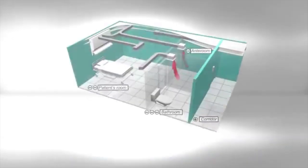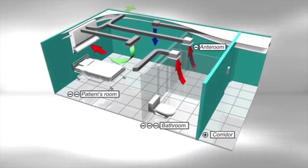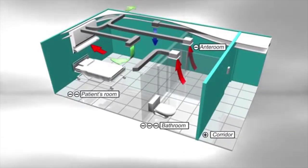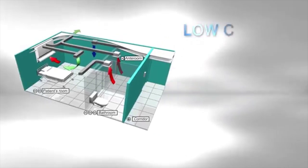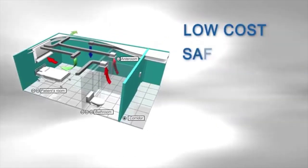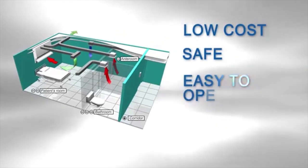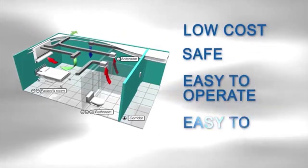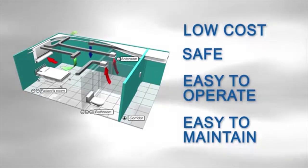The HEPA net will exhaust some or all of the intake air depending on the requirements of the installation in order to maintain the room under negative pressure. The Quality Air system will provide a negative pressure isolation room at low cost that is safe, easy to operate, and easy to maintain.